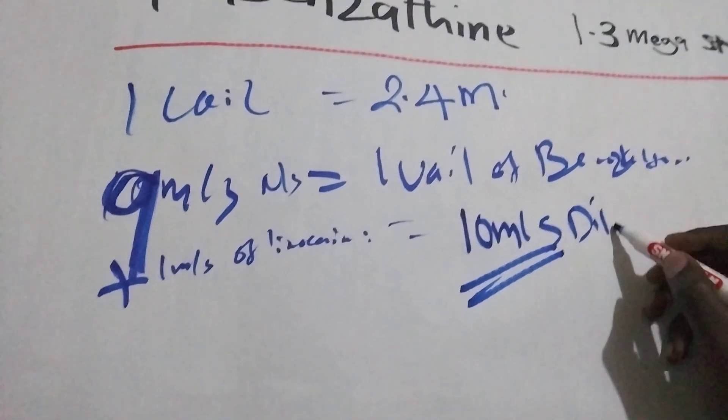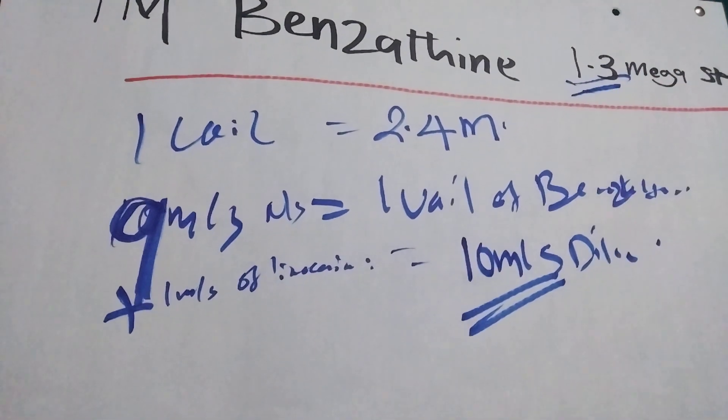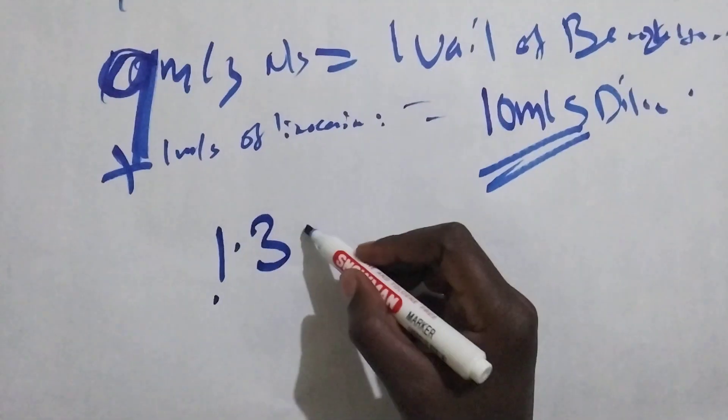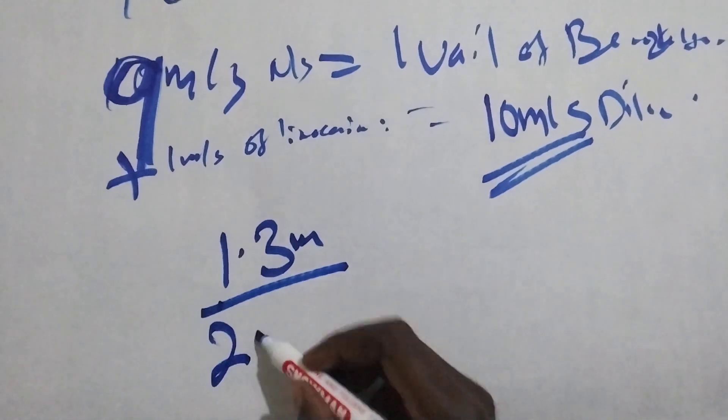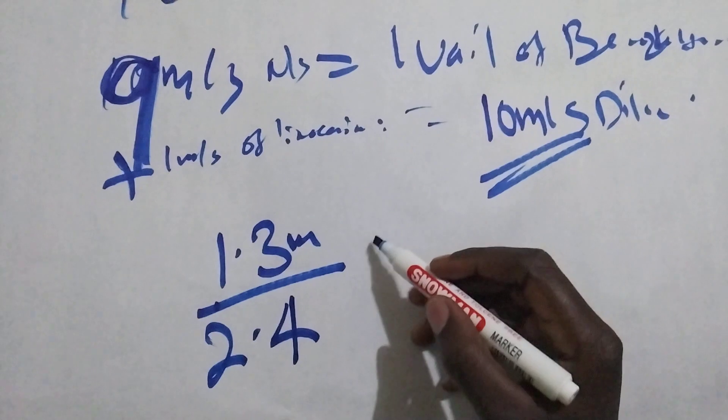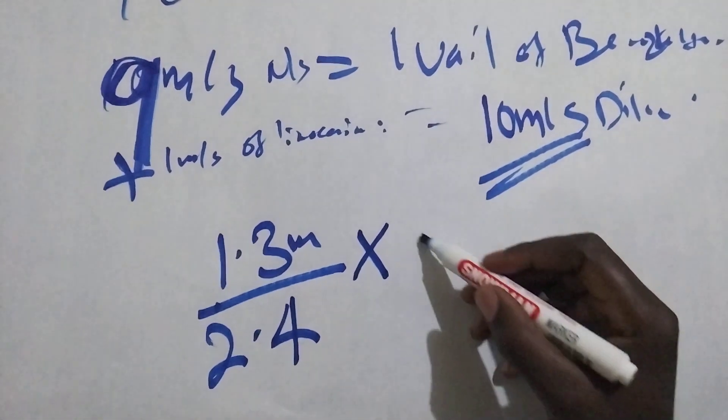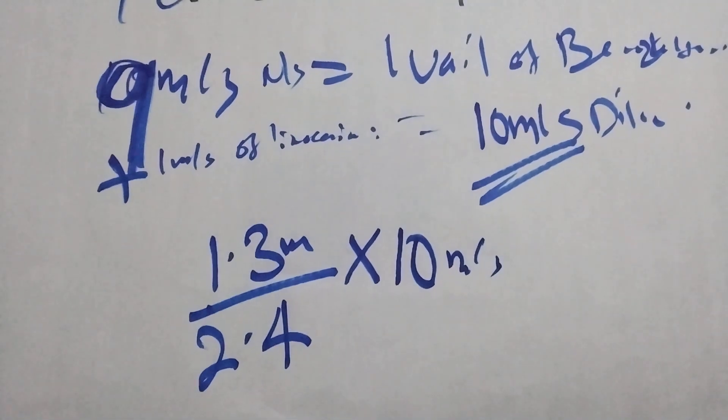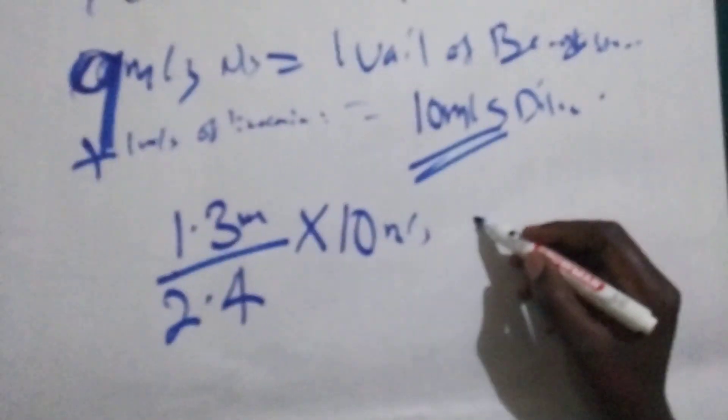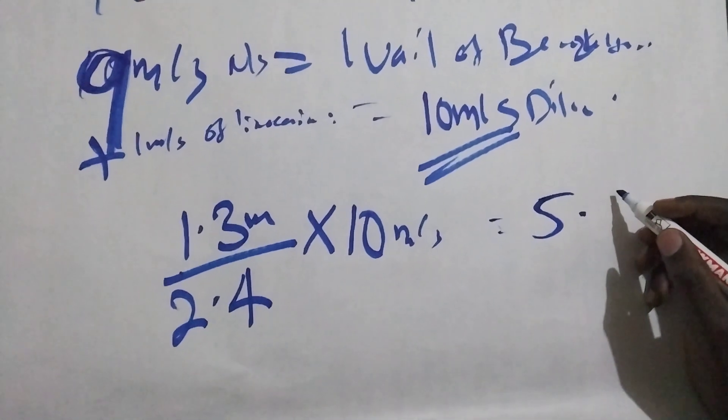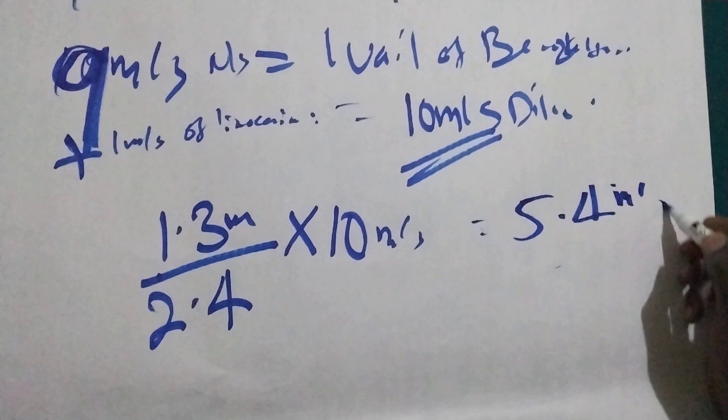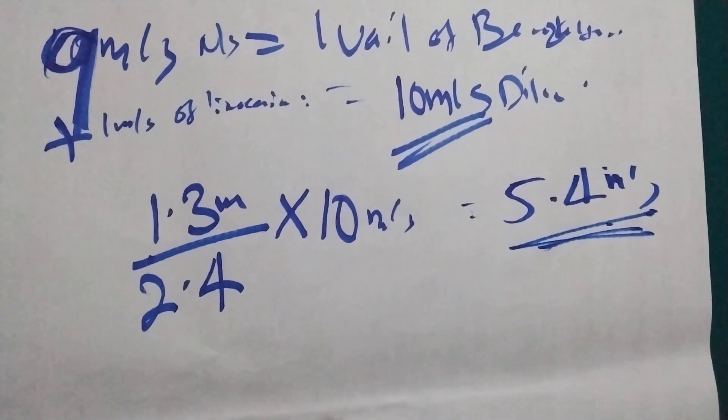So this is our dilution, isn't it? So doctor has prescribed 1.3 mega divided by 2.4 mega and then we are going to multiply by 10 mils. That is our dilution. So let me get the calculator and we see 1.3 divided by 2.4 times 10. So we are going to get 5.4 mils if you use mega unit.